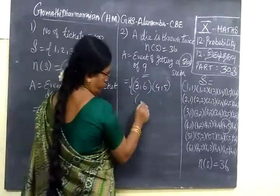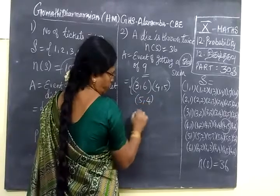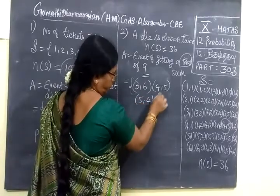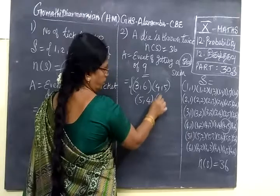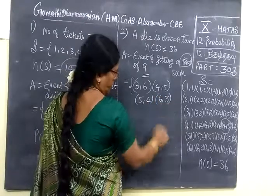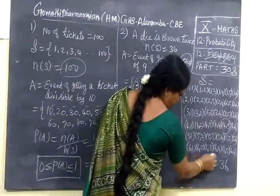Then fifth row, 5, 4. Then last row, 6, 3. So that's all.